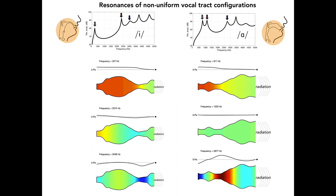You may have observed that the locations of zero pressure, or nodes, are quite similar for standing waves associated with each resonance, even though the frequency of those resonances is quite different due to the specific vocal tract configuration.